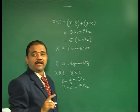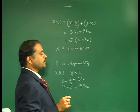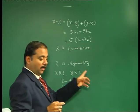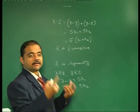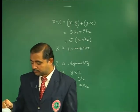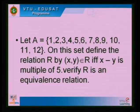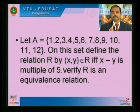Based on the definitions, we have proved that R is reflexive, symmetric, and transitive when the condition is x minus y is a multiple of 5. Therefore R is an equivalence relation. To prove a relation is an equivalence relation, we have to verify three properties: reflexive, symmetric, and transitive.